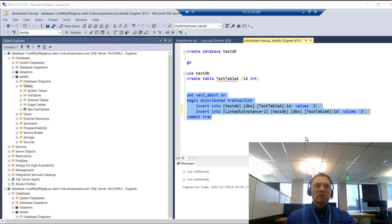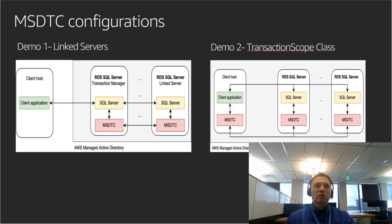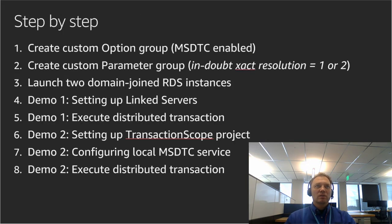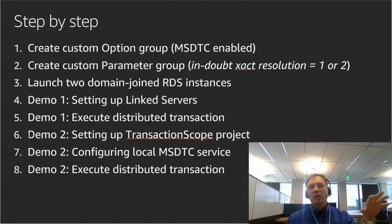That brings us to the end of our first demo. We've completed steps four and five. Now we have Demo Two: we're going to set up a TransactionScope project, configure the local MSDTC service, and then execute a distributed transaction controlled by our client application.